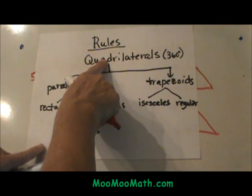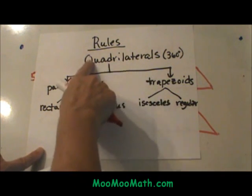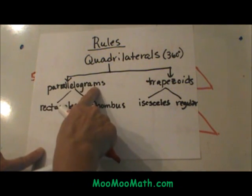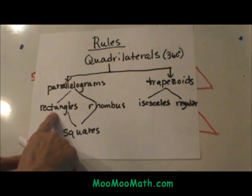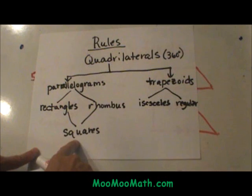Here is our quadrilateral family. Out of our family, besides some that are traditional quadrilaterals that do not fall into these categories, you can have parallelograms. Under parallelograms you can have rectangles and rhombuses, and then you can also have squares. Squares have all the characteristics of both of these.